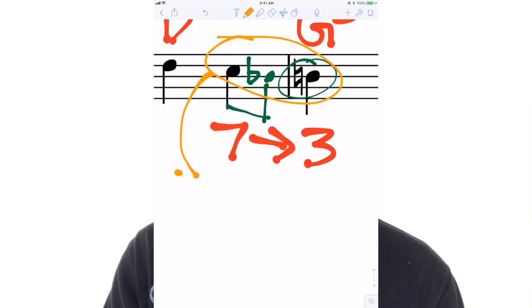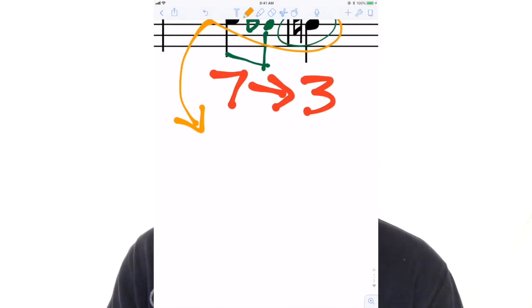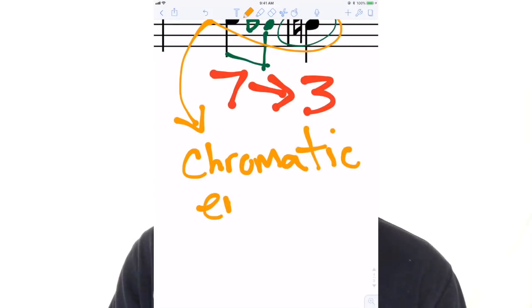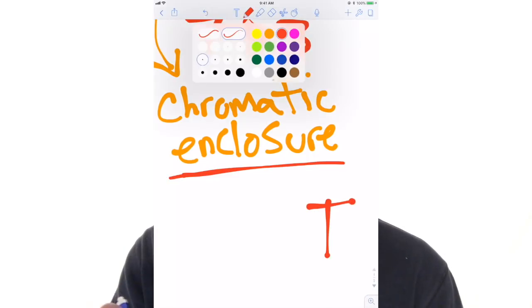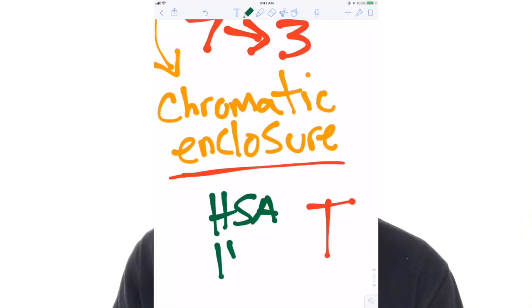As you learn more solos and licks, you notice this shape pretty often and it's called a chromatic enclosure. So what this chromatic enclosure means is that you're going to have a target note and then you're going to approach it from a half step above and a half step below before you hit this target.